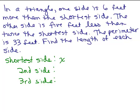It says one side is 6 feet more than the shortest side. So what does that mean? 6 feet more than means I'm going to add 6 to what? The shortest side. And the shortest side was X. So the second side here, one of the sides would be X plus 6.